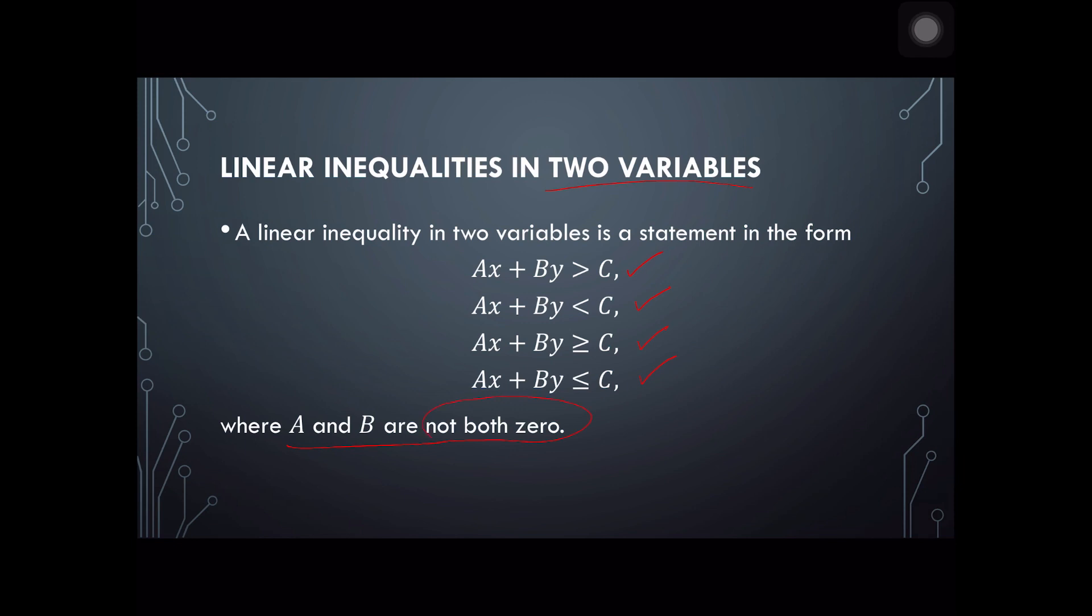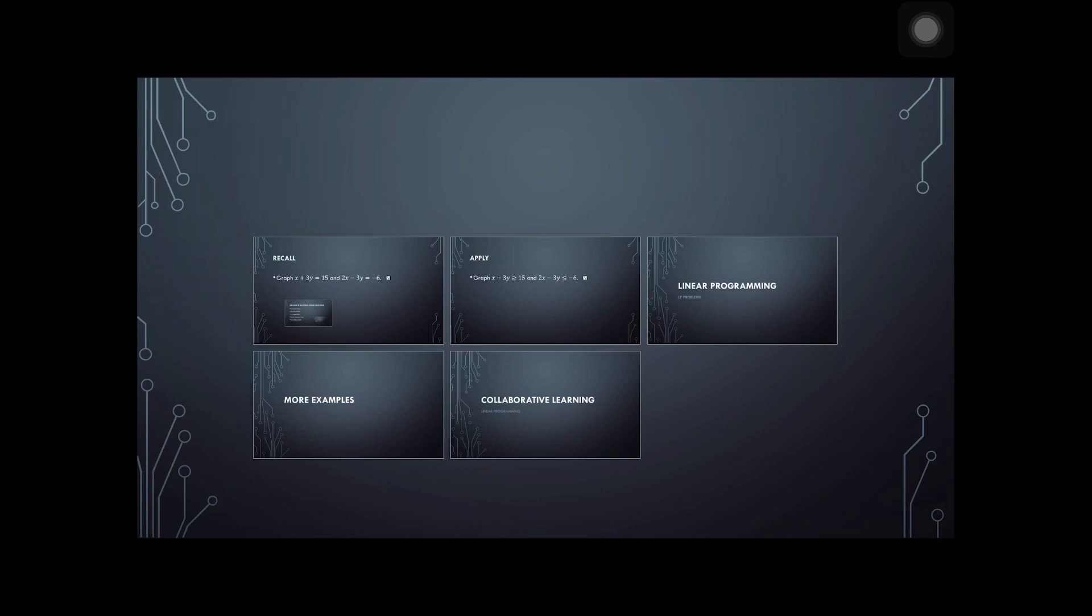That is, if A is equal to zero, we're just left with y as our variable at the left side. So if B is zero, we're left with x as our variable at the left side.